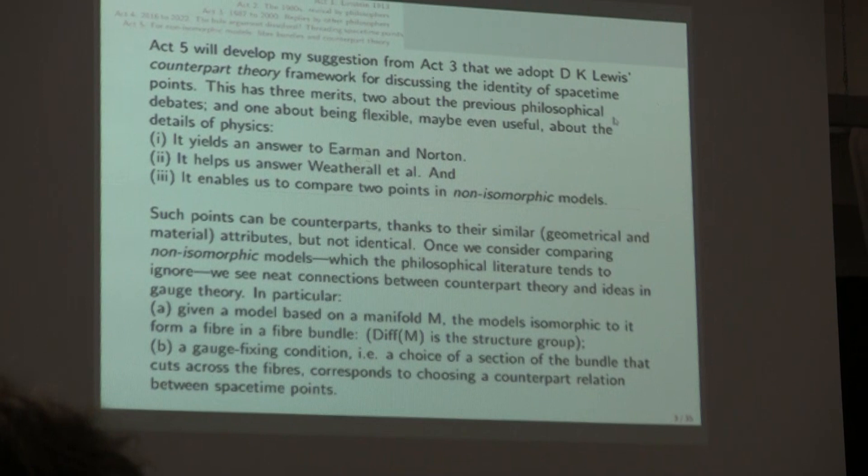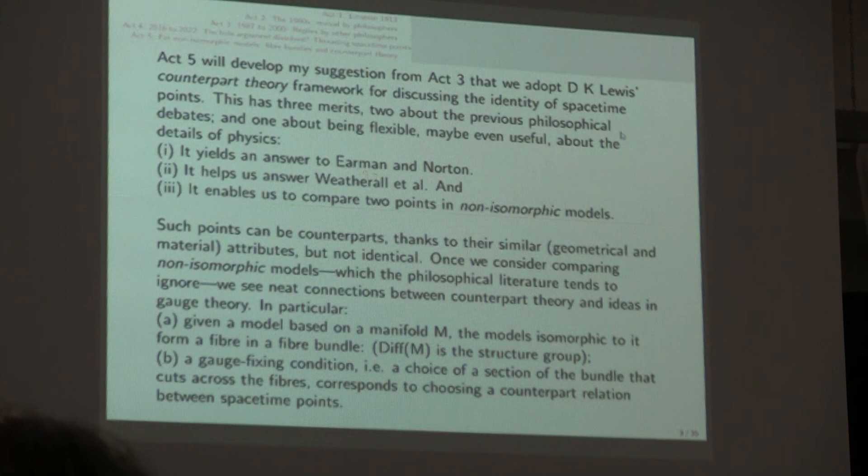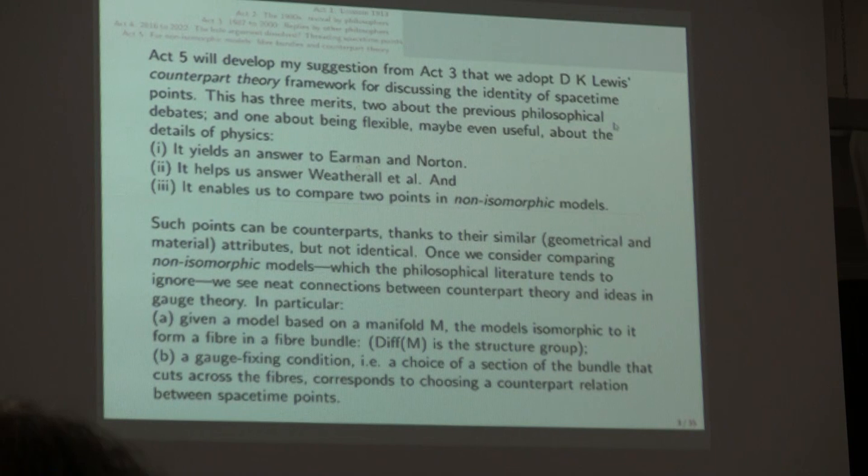The whole point of Act 5 is to go, if we're talking about Lorentzian manifolds, beyond comparing isometric manifolds, and compare non-isometric manifolds, and in particular, think of one point in one corresponding to another point in the other. So the idea will be that points like that can be counterparts, thanks to their having similar attributes.